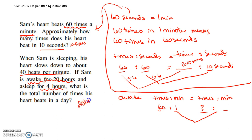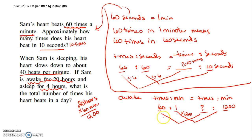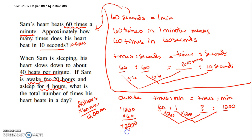20 hours times 60 minutes in an hour. Put down the zero, six times zero is zero, six times two is 12 — so 20 hours is actually 1,200 minutes. So how do I get from 1 to 1,200? I multiply by 1,200. So I take 60 times 1,200 to figure out how many times it beats in 20 hours, which is 1,200 minutes. 60 times 1,200: put down the zero, six times zero is zero, six times zero is zero, six times two is 12, put down a two carry one, six times one is six and one is seven — so 72,000 times it beats in the 20 hours he's awake.